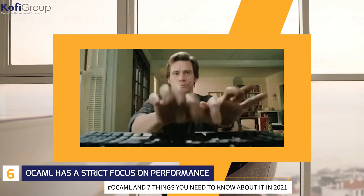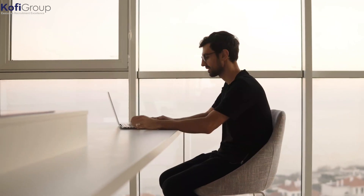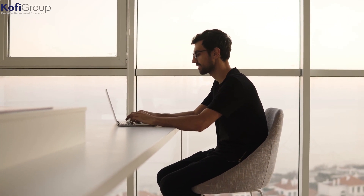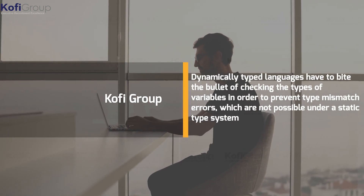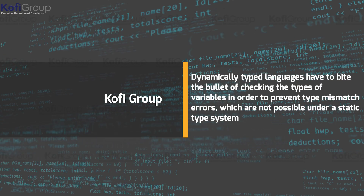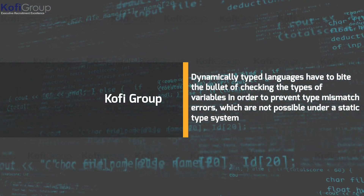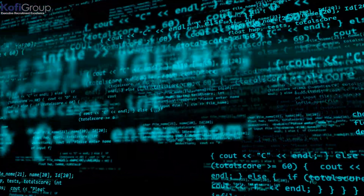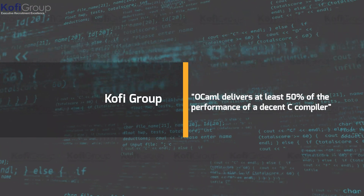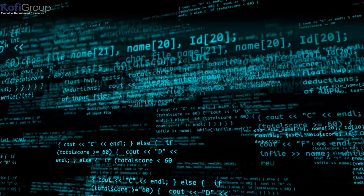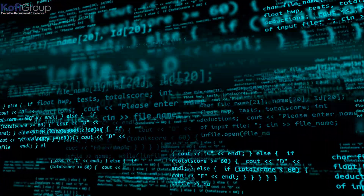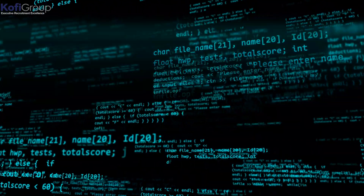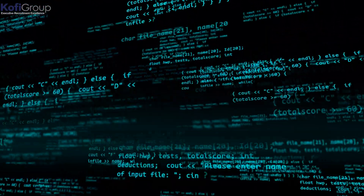6. OCaml has a strict focus on performance. All ML languages have the advantage of static type systems, which dramatically optimizes compilation and execution. Dynamically typed languages have to check the types of variables at runtime to prevent type mismatch errors, which are not possible under a static type system. Xavier Leroy, one of the core developers of OCaml, has stated that OCaml delivers at least 50% of the performance of a decent C compiler. Results from the great computer language shootout provide evidence that OCaml is the second-fastest programming language, right behind C — though it's worth noting that OCaml is both type-safe and memory-safe, while C is neither.